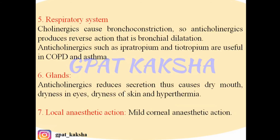On the respiratory system, cholinergic drugs produce bronchoconstriction, so anticholinergics produce the reverse action — bronchodilation. Anticholinergics such as ipratropium and tiotropium are useful in COPD (chronic obstructive pulmonary disease) and asthma.